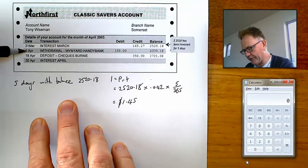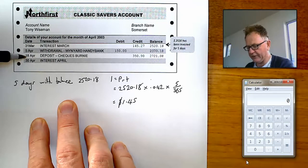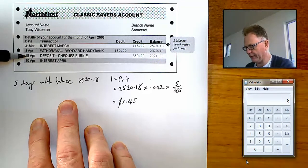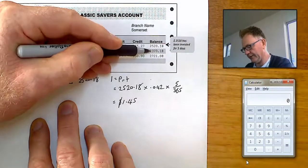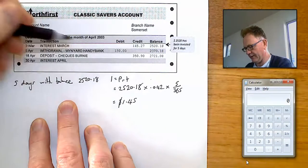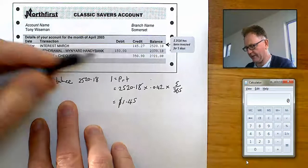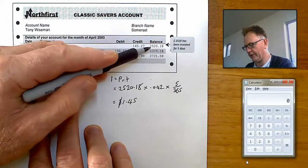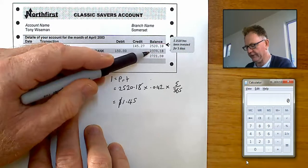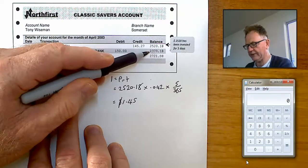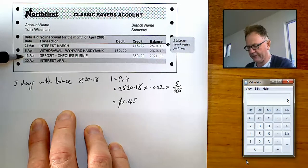Then, from the 5th of April to the 18th of April. Well, that'll be 13 days in there. 18 minus 5 equals 13. The balance was this much. See, he withdrew $150.00. That's taken off the original amount to give us this. And that didn't change for the next 13 days.